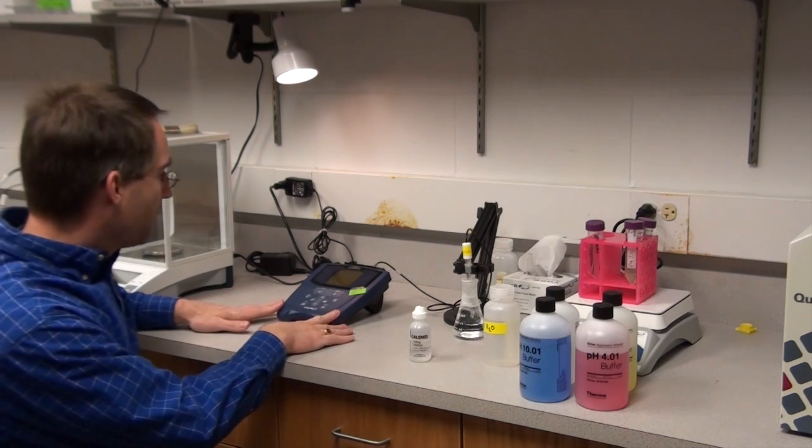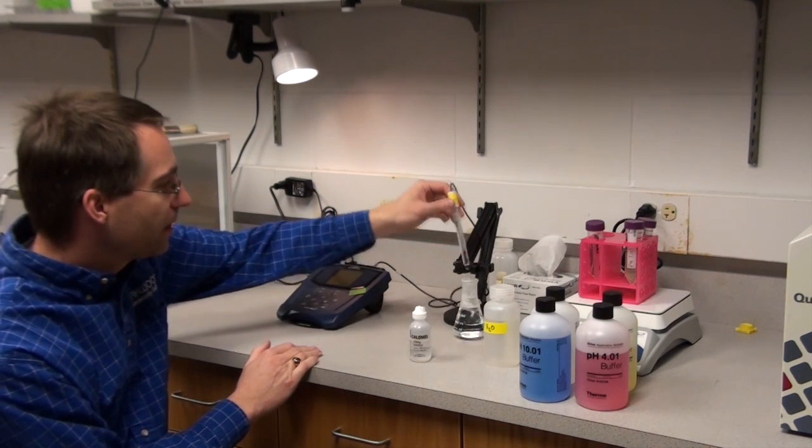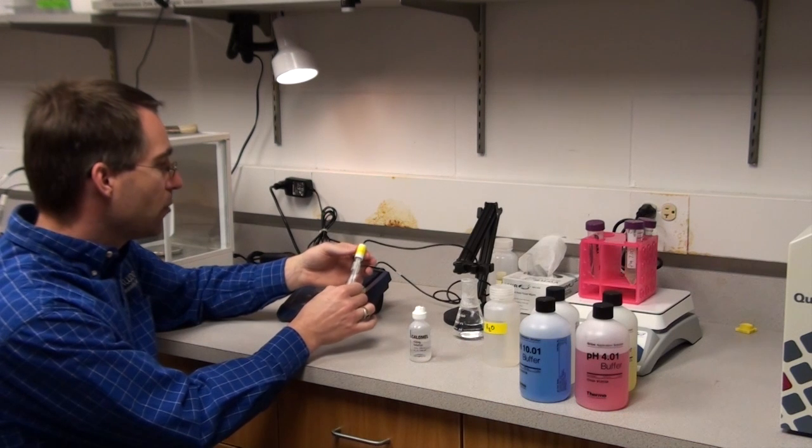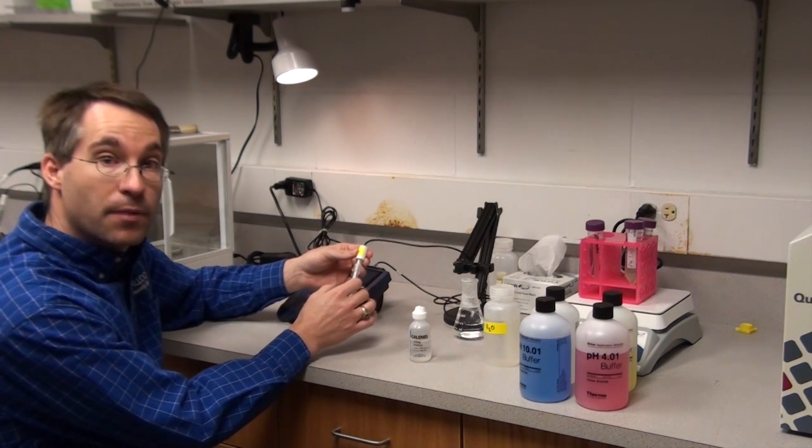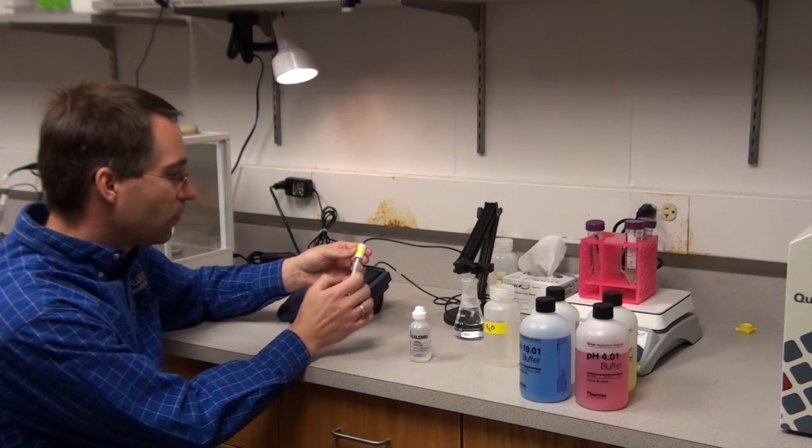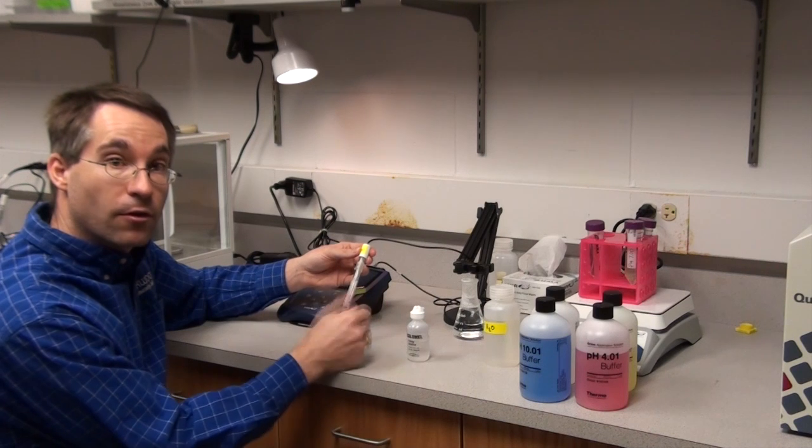So here's a pH meter. I'm using a VWR Symphony brand, and the probe that I'm using in this particular case is a VWR Calomel probe, so it's a probe that is compatible with Tris buffers. It has an internal reference solution that contains potassium chloride as opposed to silver chloride.